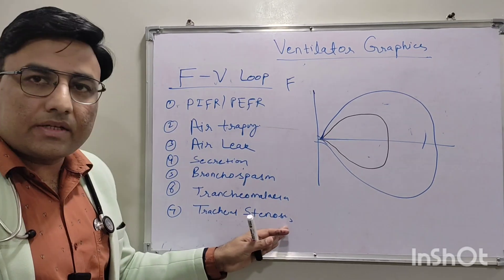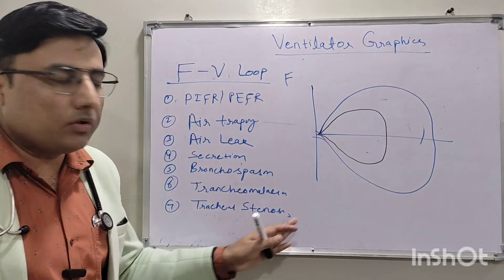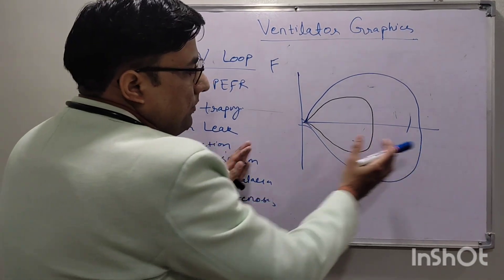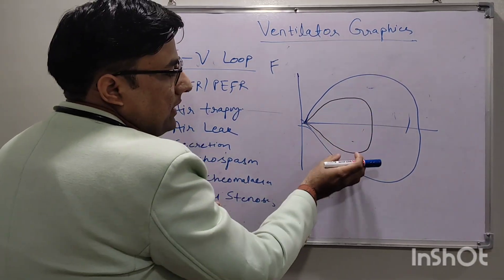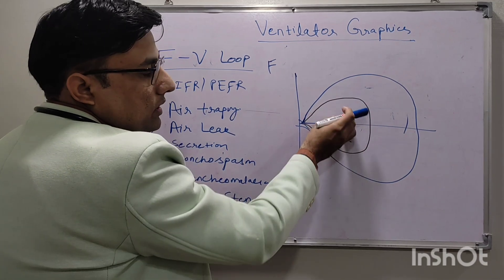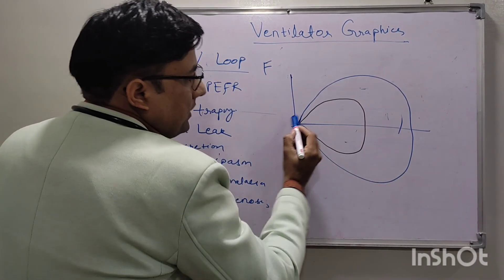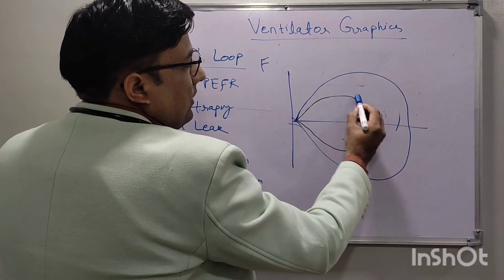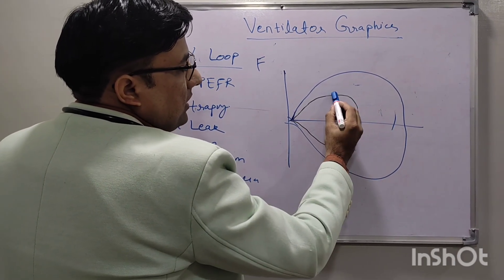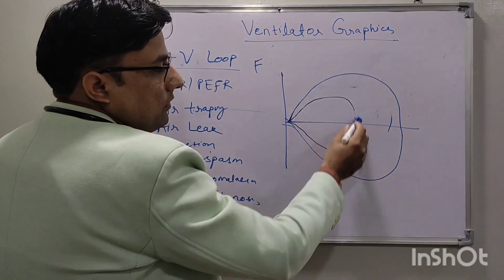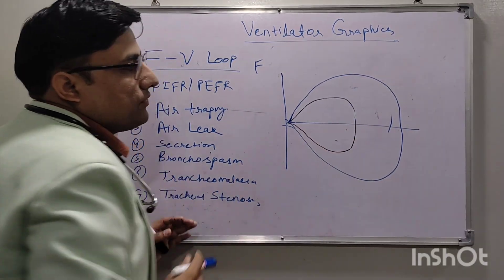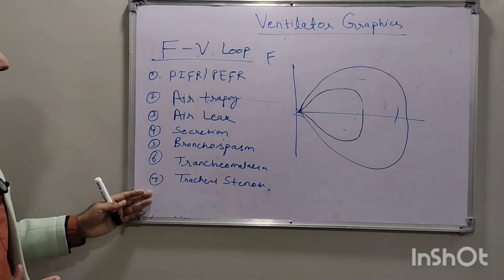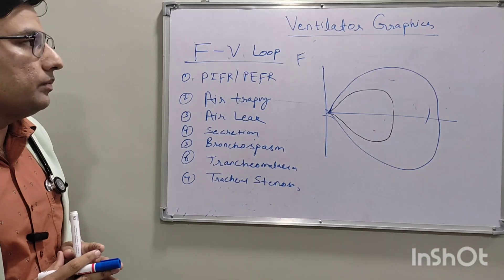If airway obstruction is present — such as tracheal stenosis or subglottic stenosis — the graph will become smaller. Both the inspiratory and expiratory curves will be reduced, including peak expiratory flow rate and inspiratory flow rate. This overall reduction in graph size indicates some obstruction is present.